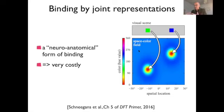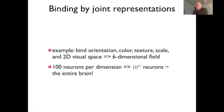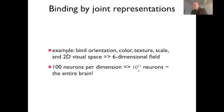In the low-dimensional approach you only need as many neurons as in the lowest-dimensional space. Here you need a neuron for every combination of values. For instance, if you want to bind orientation, color, texture, scale, and two-dimensional visual space — six dimensions total — with only 100 neurons per dimension, you already have 10^12 neurons. That is roughly the estimated number of neurons in the entire brain excluding the cerebellum.